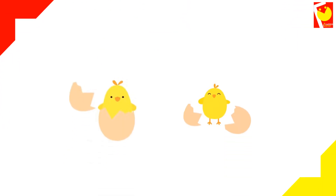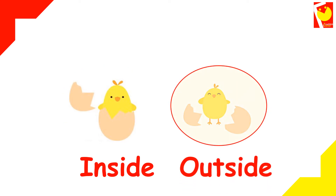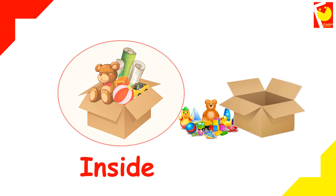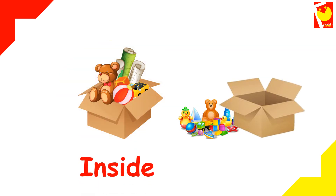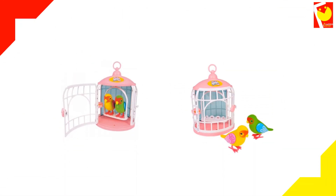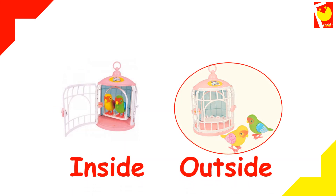There is a chick who is inside the eggshell whereas the other chick is outside the eggshell. The toys are placed inside the box and on the other side toys are placed outside the box. The birds are sitting inside the cage whereas birds are sitting outside the cage.